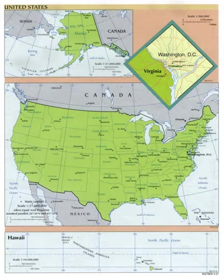Article 4, Section 3 of the Constitution for the United States of America defines the extent of the authority that the U.S. Congress exercises over the territory of the United States: New States may be admitted by the Congress into this union, but no new state shall be formed or erected within the jurisdiction of any other state, nor any state be formed by the junction of two or more states, or parts of states, without the consent of the legislatures of the states concerned as well as of the Congress. The Congress shall have power to dispose of and make all needful rules and regulations respecting the territory or other property belonging to the United States. The power of Congress over territorial divisions that are not part of one of the states is exclusive and universal.